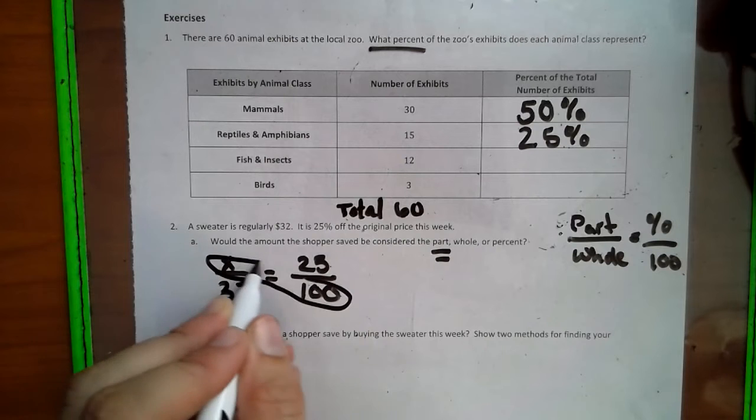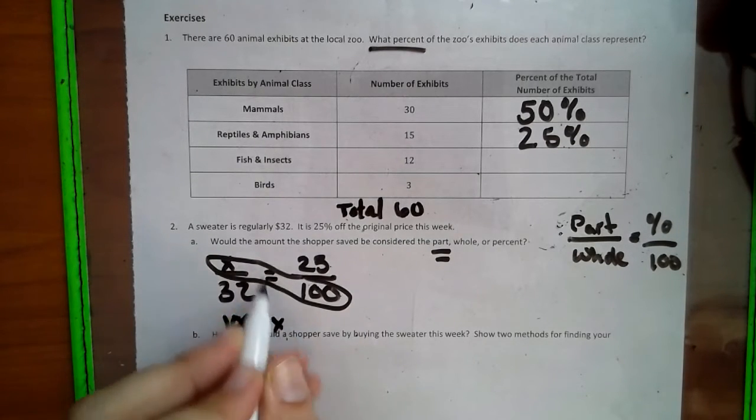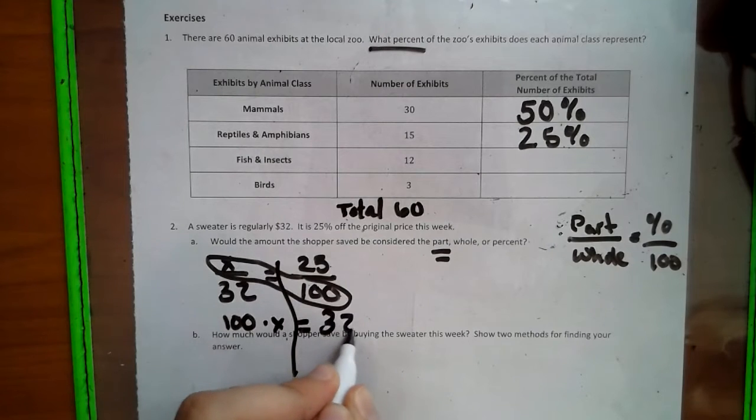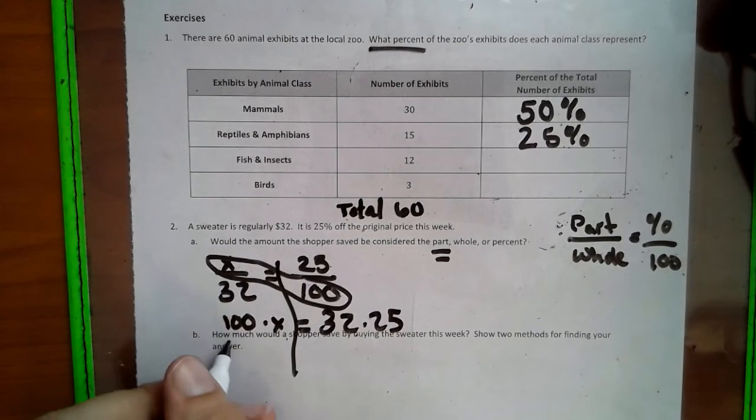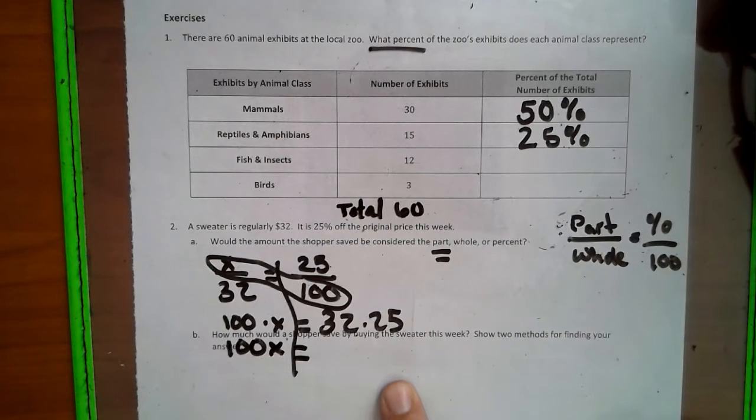So we're going to do cross multiplication here. So we have 100 times x equals 32 times 25. So we have 100x equals 32 times 25. So we take that to the side of our paper. If you're at home or something like that and you have access to a calculator, you can always check that math on a calculator just to make sure that you did the math correctly.